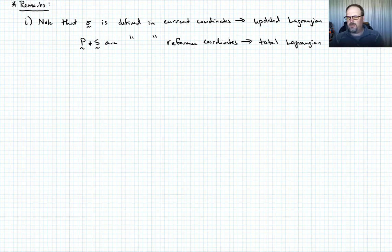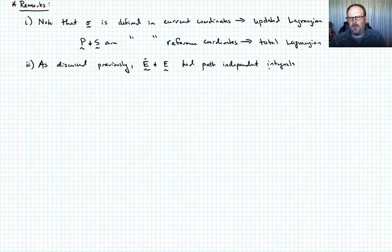Something else to note, so this would be number two. So as we discussed previously in our lecture on strain measures, we had that E dot and E, those Green or Lagrange or Green-Lagrange strain tensors, were path independent, the integrals of those were path independent. And those were the strain forms that we used in the total Lagrangian formulation.